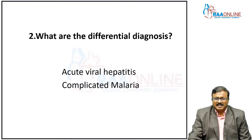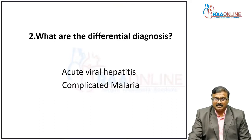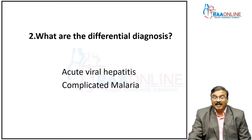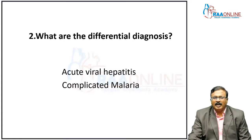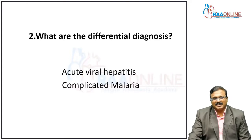Apart from this, what are the differential diagnoses? Acute viral hepatitis — the patient has icterus, so it could be viral hepatitis with hepatomegaly, or a complicated malaria — complicated falciparum or a complicated vivax malaria.